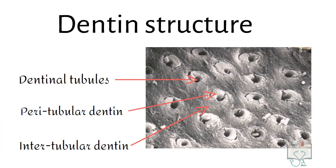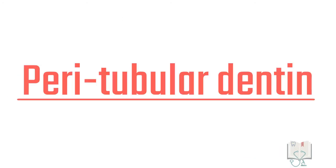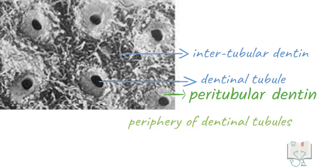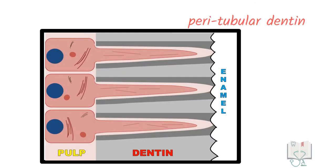So that was about the dentinal tubules. Now coming to the peritubular dentine. As the name suggests, it is the dentine at the periphery of dentinal tubule. It forms the wall of the dentinal tubule.